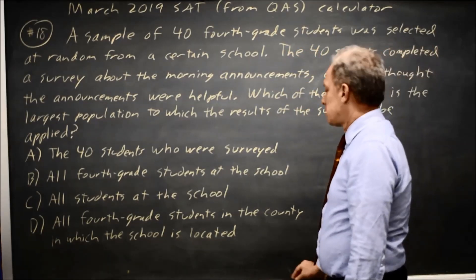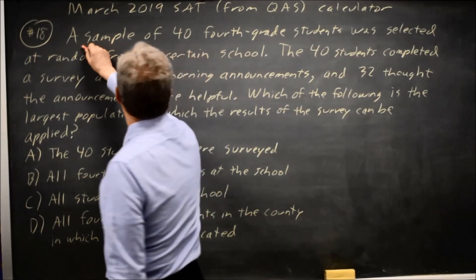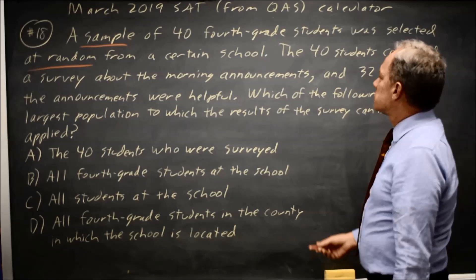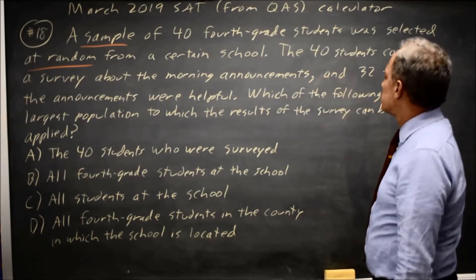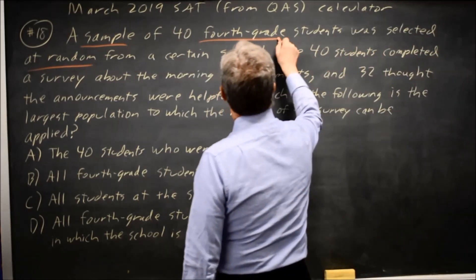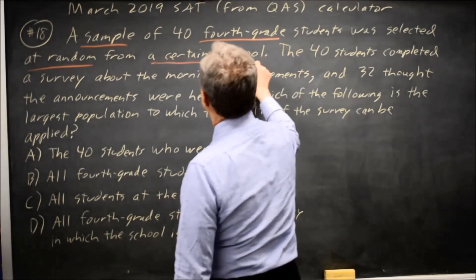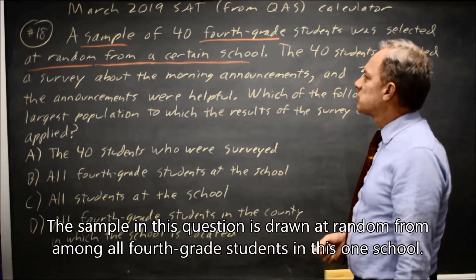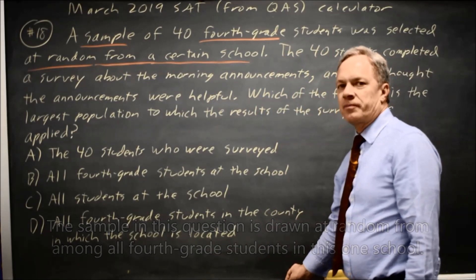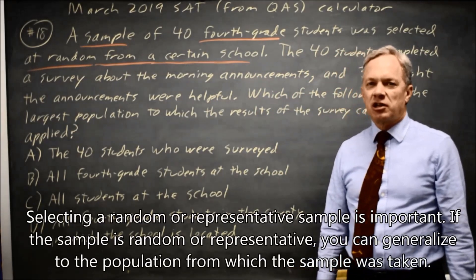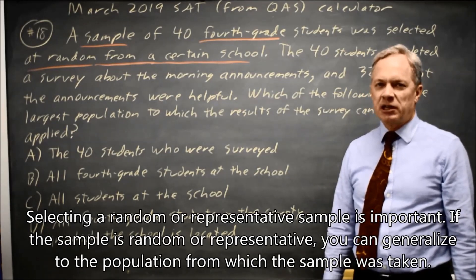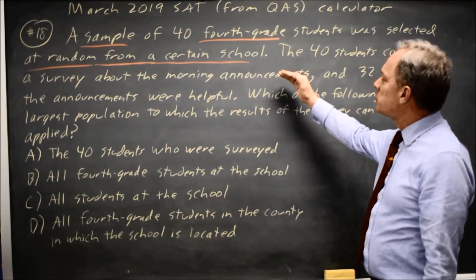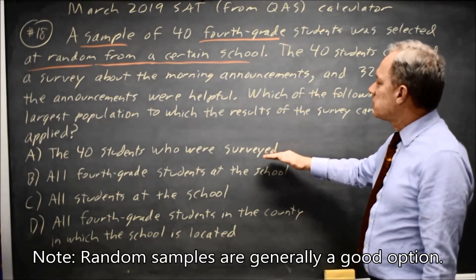We have a sample selected at random. These students are surveyed about morning announcements — 32 out of 40 randomly selected 4th grade students from a certain school. So the population we drew from was 4th grade students at that school, and we selected a random sample. In surveys, a random sample is often talked about as the best way of sampling, and we're going to treat it as a good option. Look at these choices.